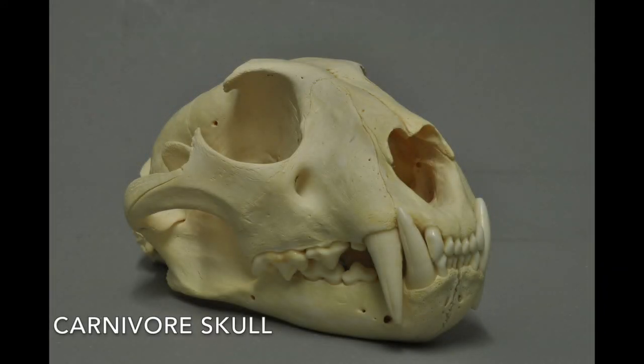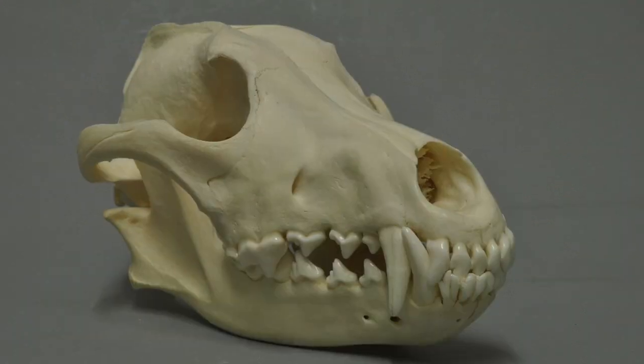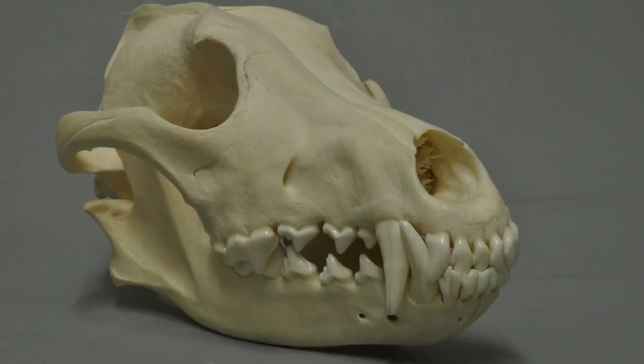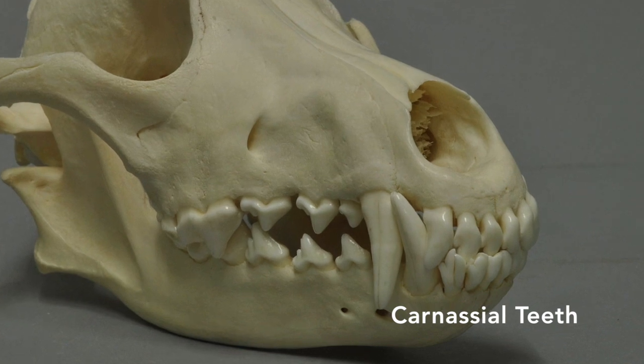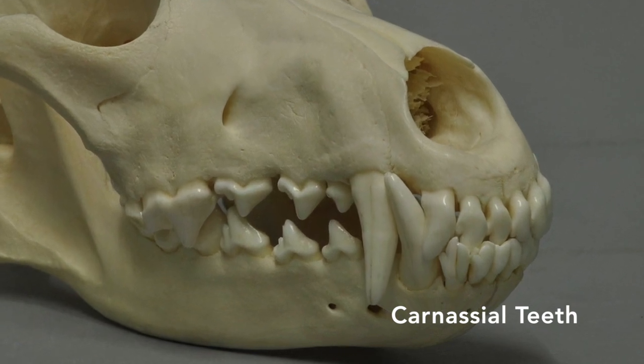Carnivores such as this lion have prominent canine teeth to puncture and capture prey. Premolars and molars of carnivores can be modified into shearing scissor-like teeth called carnassial teeth that can tear and shred meat.